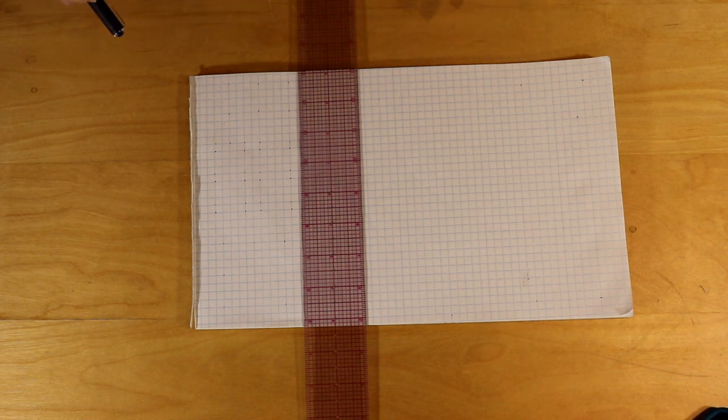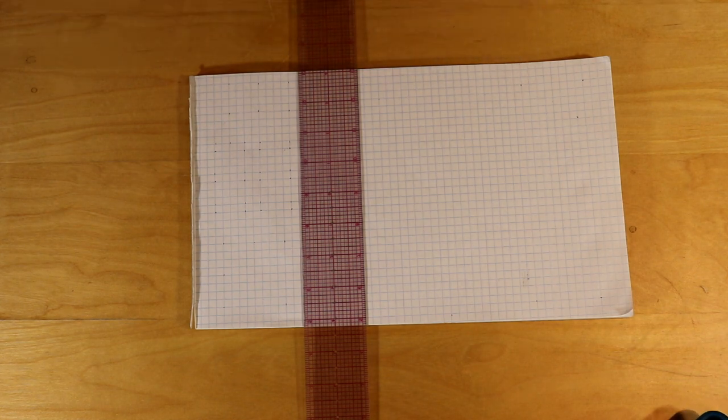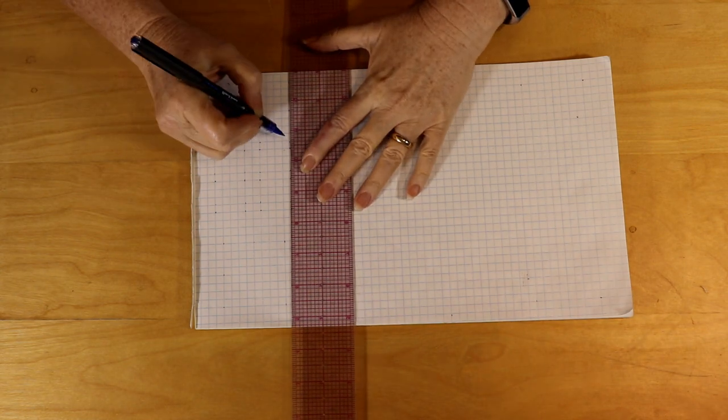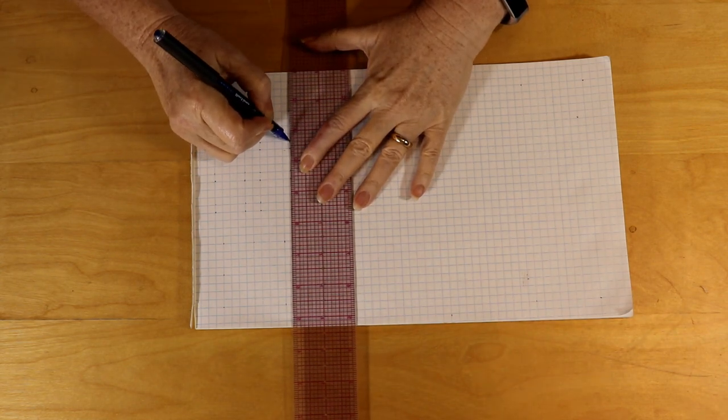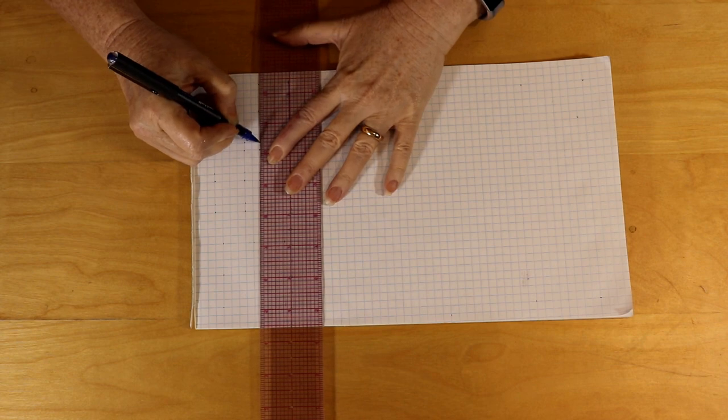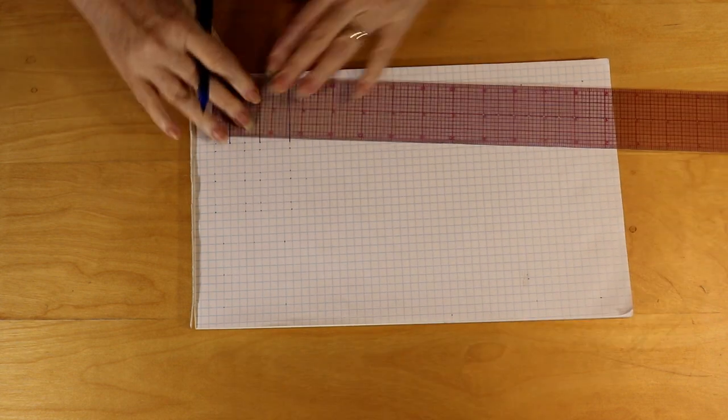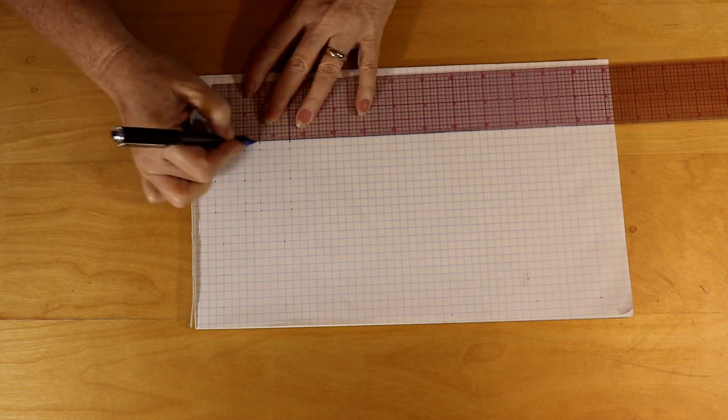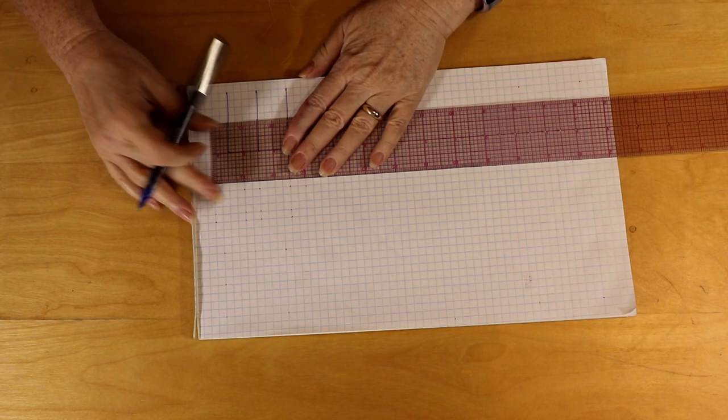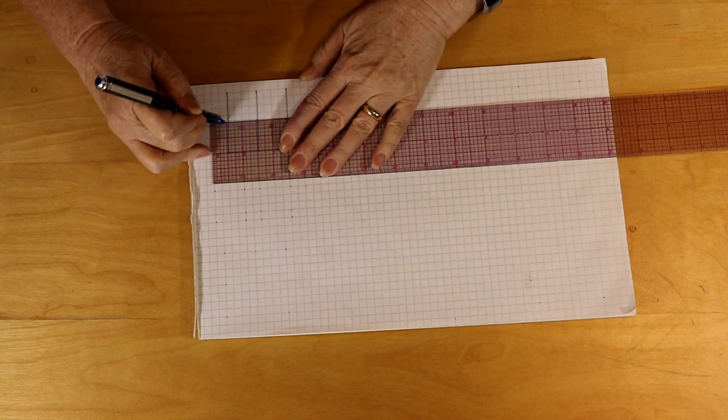Okay, let's start with some basic blocks. A basic block like a four patch - let's say you were doing mini four patches. So I'm just going to draw out a quick four patch here.